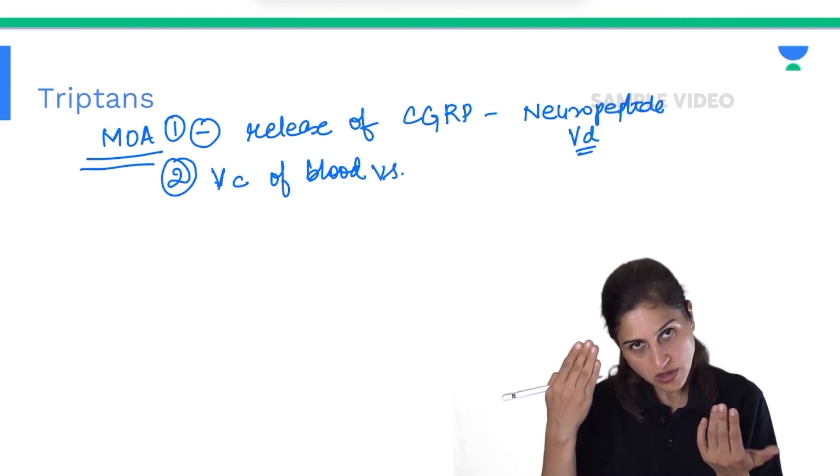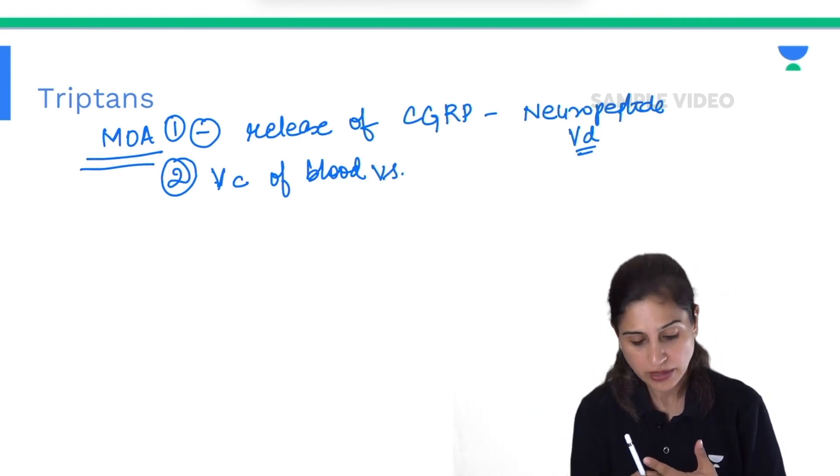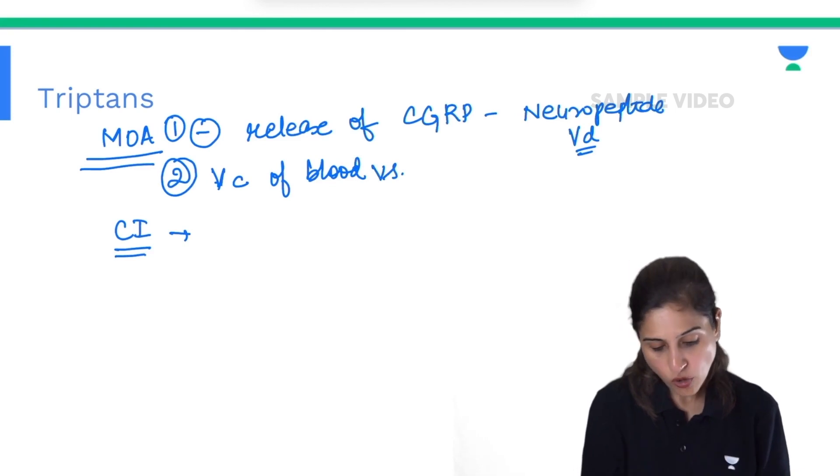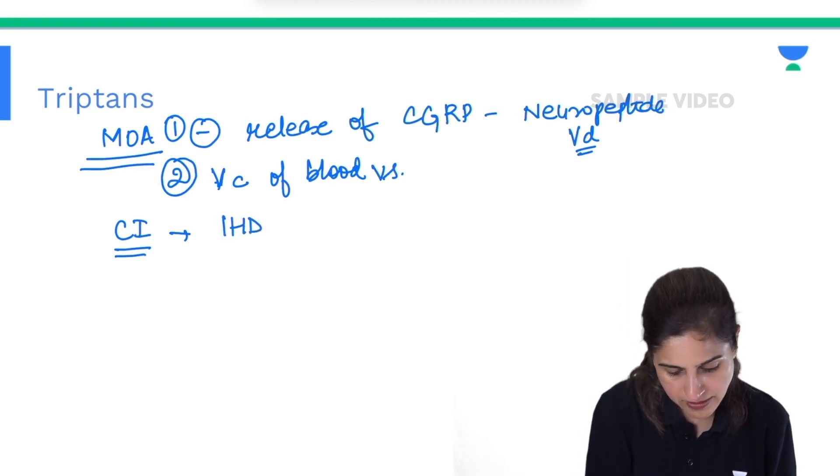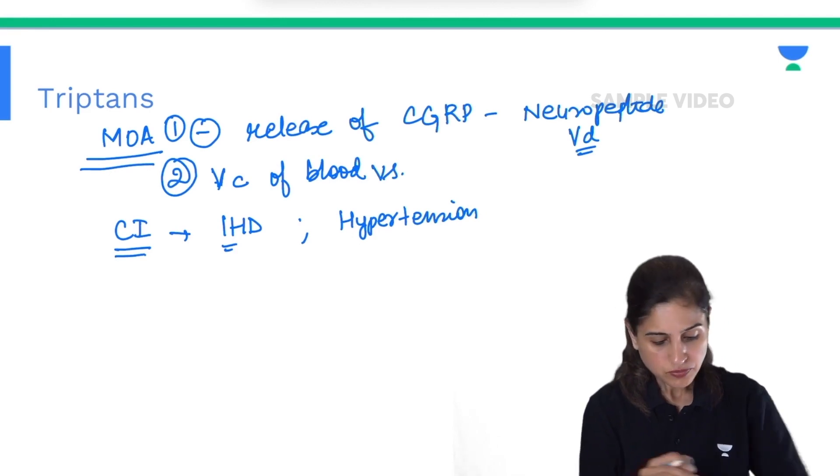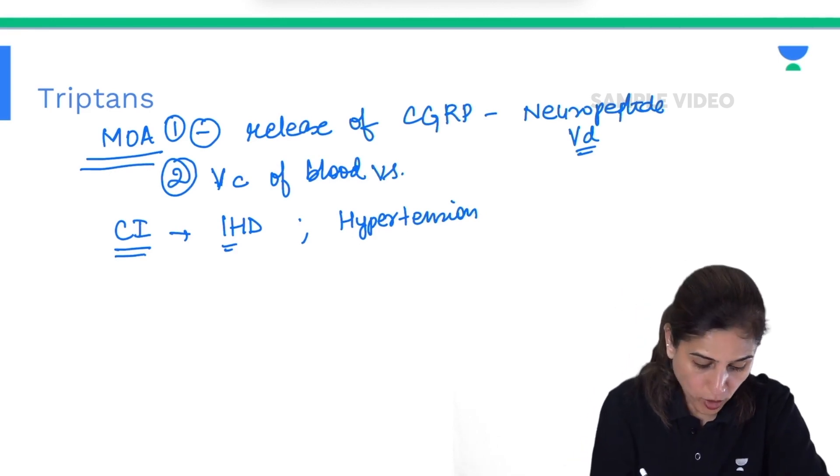Not only of the meningeal blood vessels, they cause vasoconstriction of blood vessels in the whole body. Because of this reason, these drugs are contraindicated in patients of ischemic heart disease and they cannot be given in patients of hypertension.